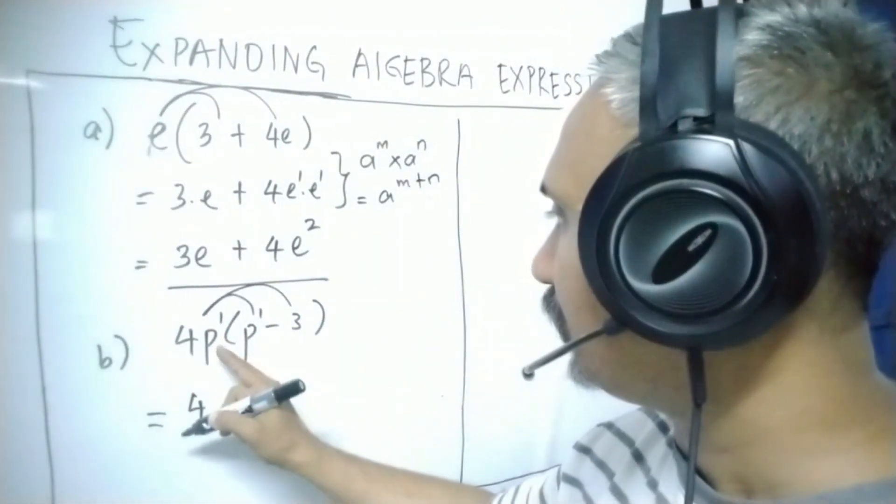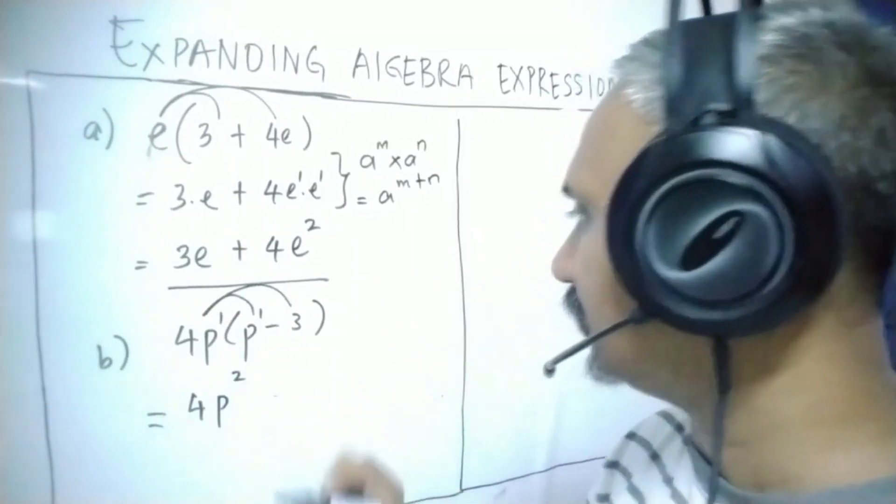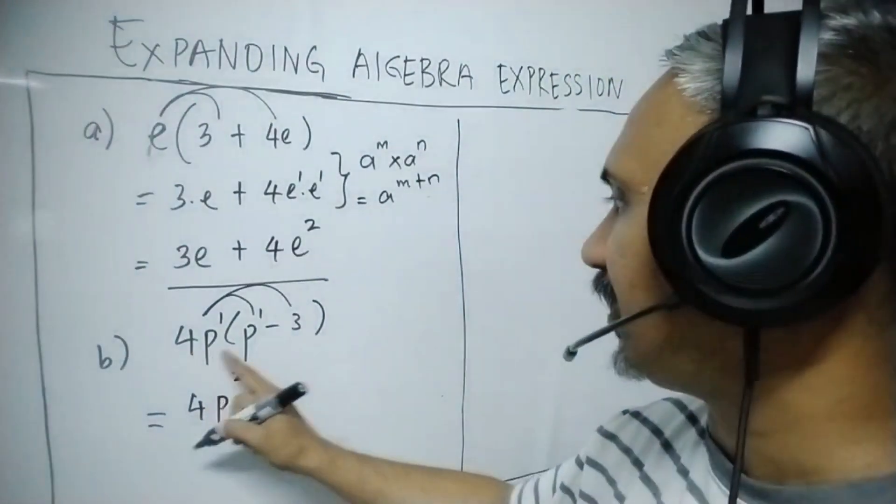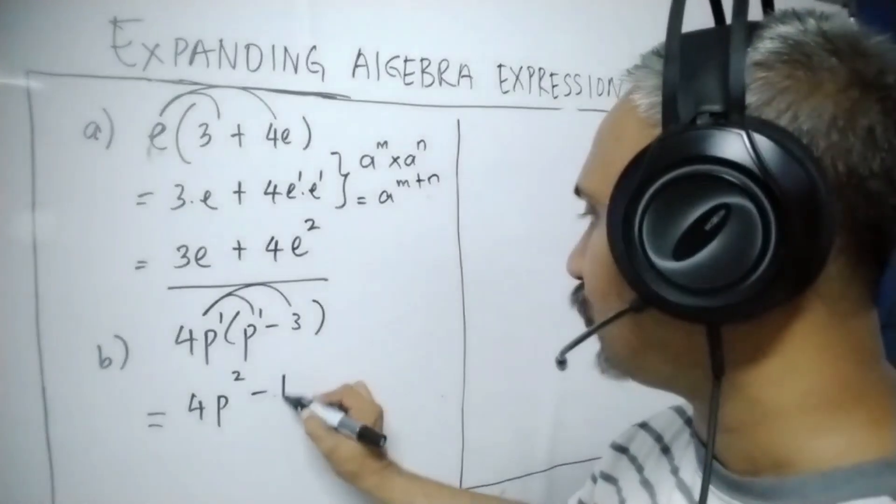4, 1 plus 1, P power of 2. And then 4P times negative 3 is negative 12P.